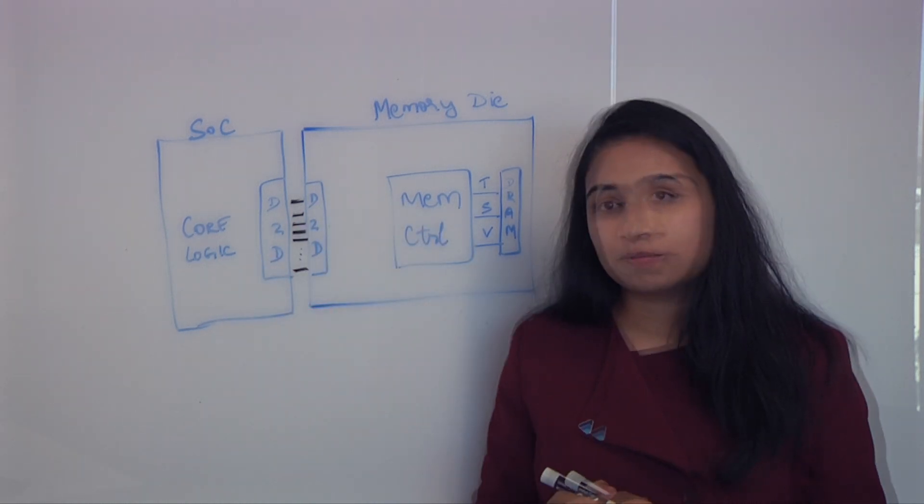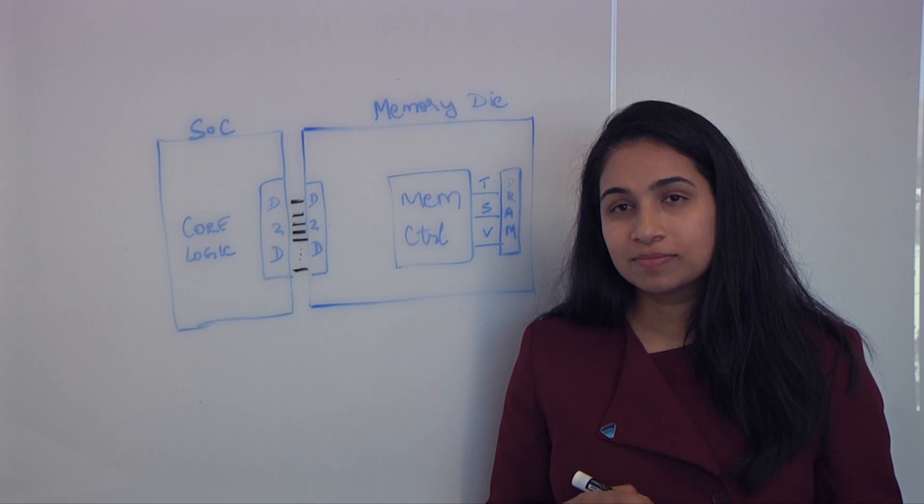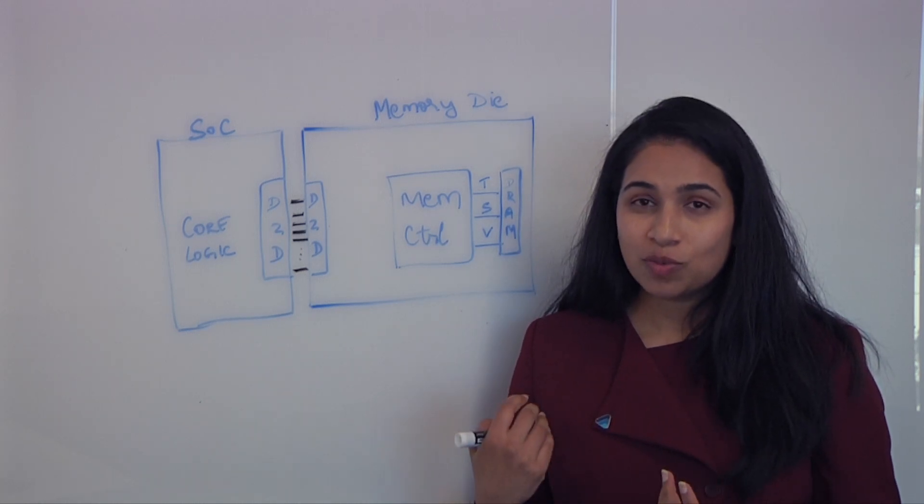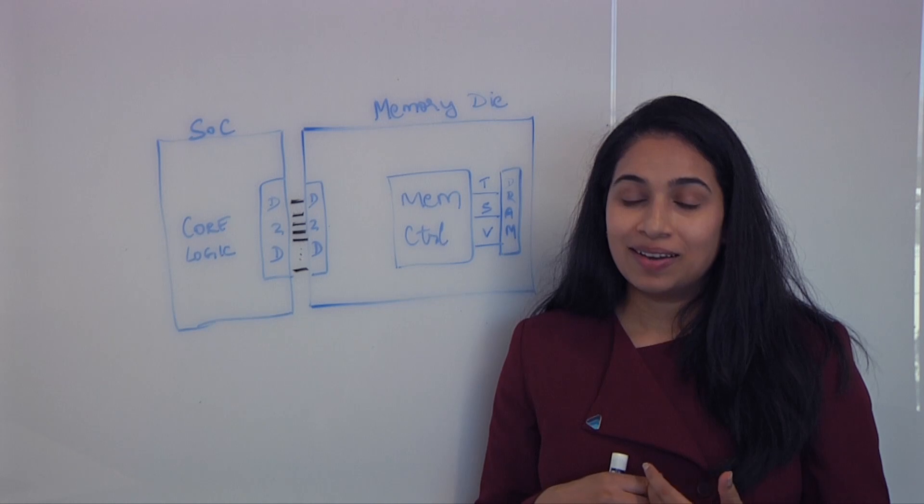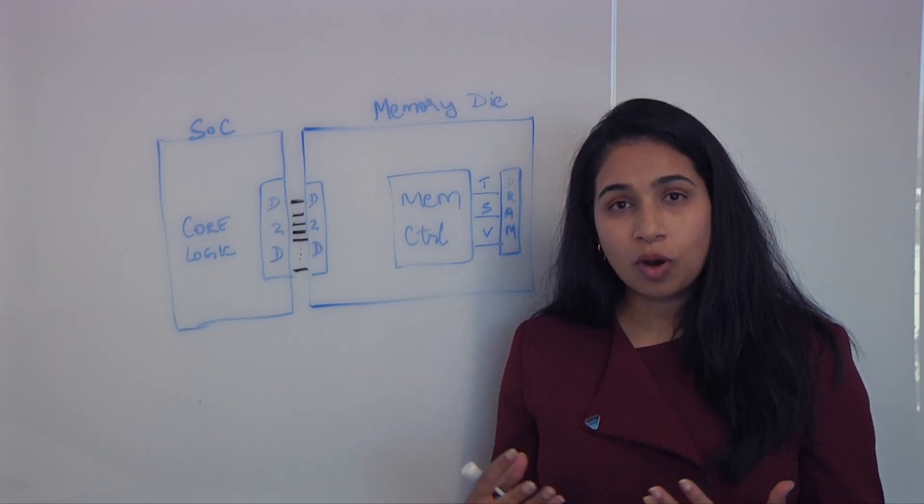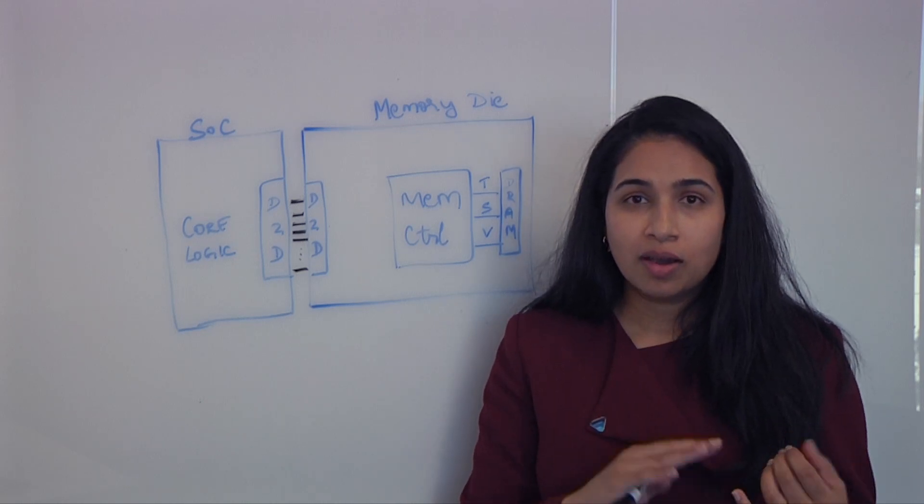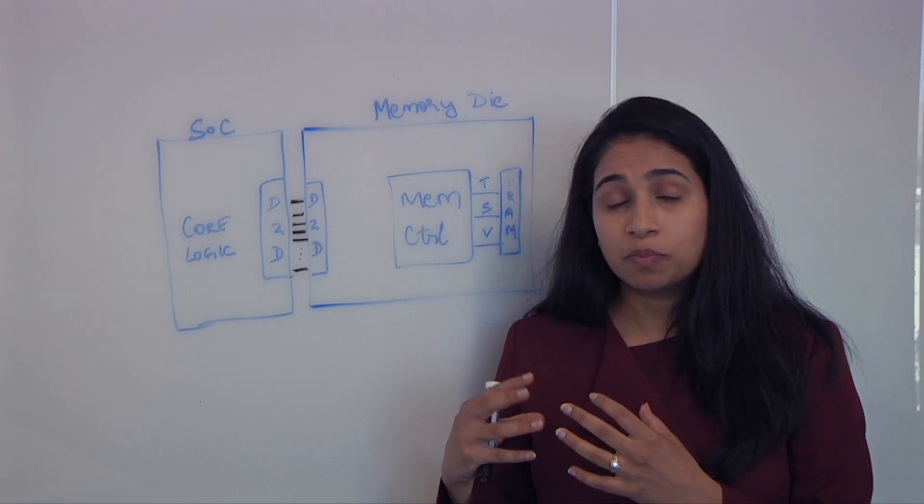So given this extremely high data rate of the UCIe, now you can pack multiple links, UCIe modules on the shoreline and quickly transmit data from your memory to your SOC core logic through a die-to-die interface. And this becomes a chiplet race, too, because you really want to assemble these things very quickly. That's correct. And if you think about it, HBM was the first chiplet of its kind.